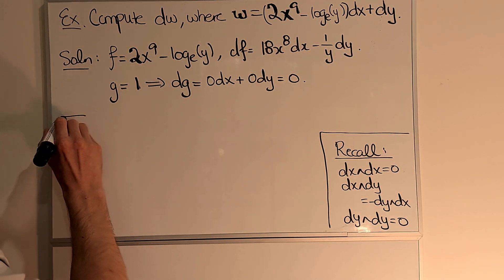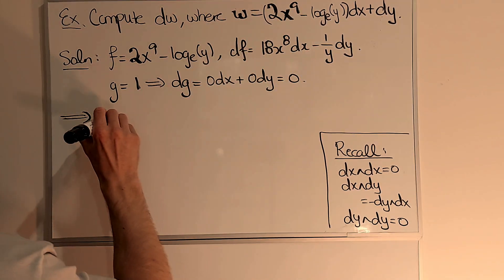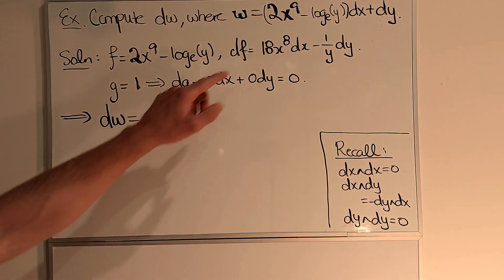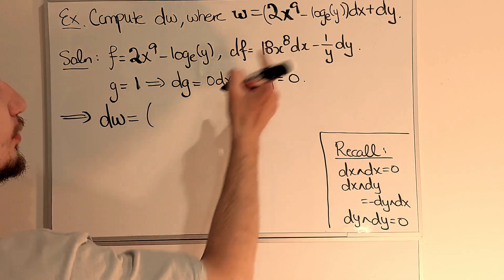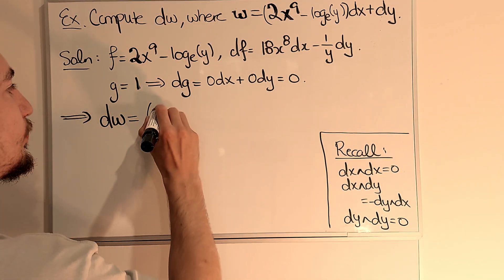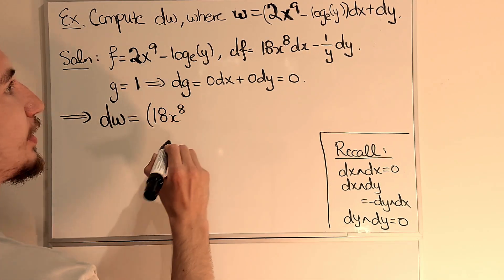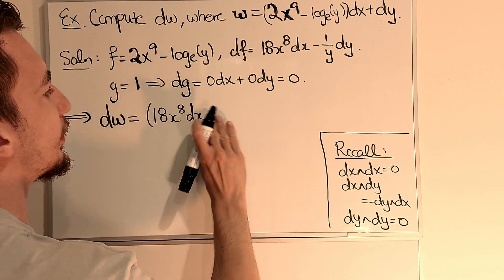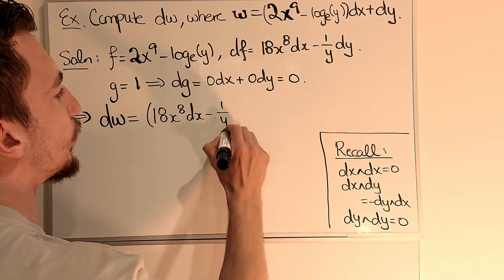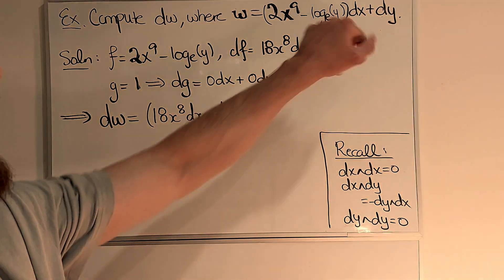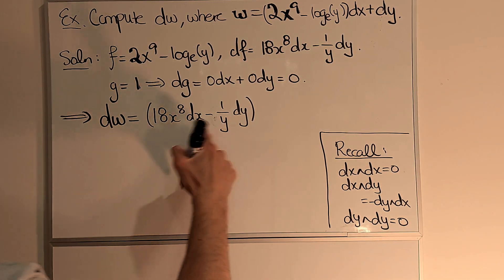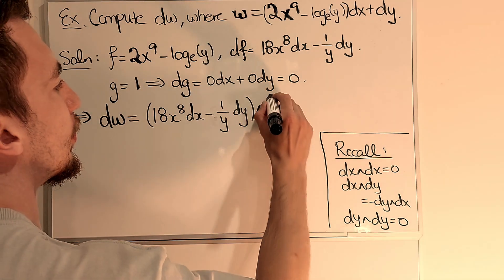Now to compute the exterior derivative of omega, what I find is that I just insert my expression for df. So the first component function is 18x to the 8 dx minus 1 over y dy. But now I have this dx term, which when I pair two forms, I have to wedge them.